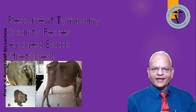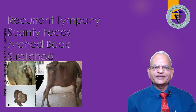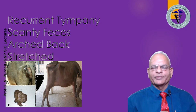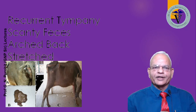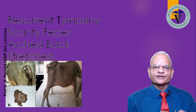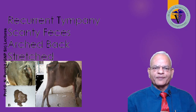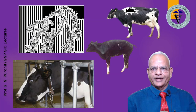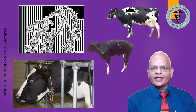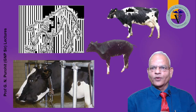The early clinical findings could be recurrent tympani, scanty feces, arched back, and stretched abdomen. When metallic objects are in the reticulum, they may cause a lot of problems — the animal may grunt frequently because of pain, and has an anxious look. It stands with an arched back, becomes off feed, milk yield goes down, and the animal may face recurrent tympani.